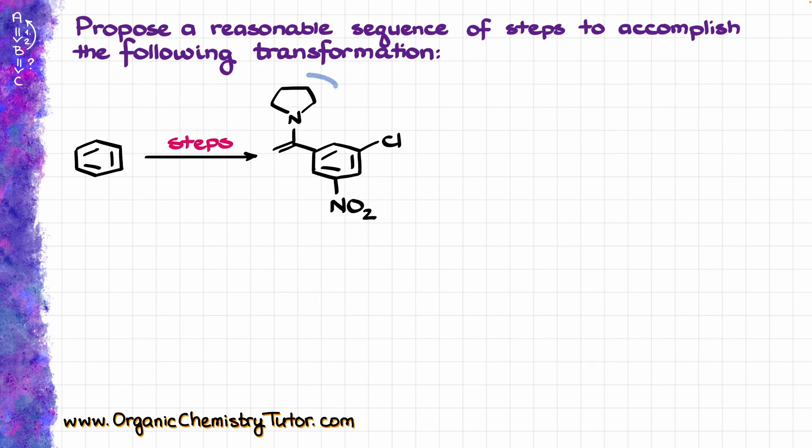So the first thing that jumps at me right away is this functional group over here, which is an enamine. And when it comes to enamine synthesis, we typically make those from the corresponding aldehydes or ketones and secondary amines. So it is reasonable to assume that the very last step of the synthesis is actually going to be our enamine formation, which means that I can write the precursor carbonyl right away.